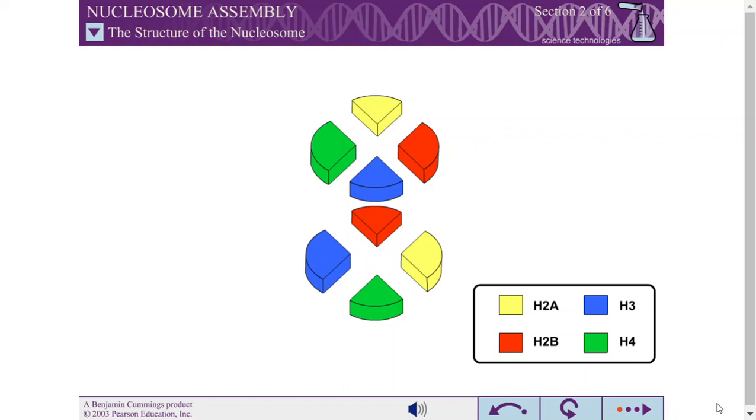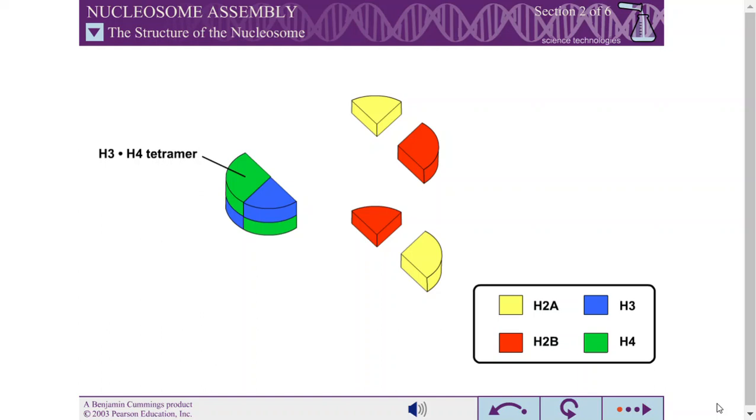This histone core is assembled from histone protein subassemblies. The H3 and H4 proteins form a tetramer subassembly. Two H2A, H2B dimers complete the histone core.